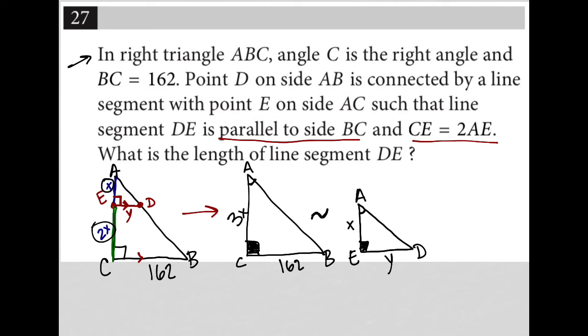And because they're similar, that means the corresponding sides are proportional. So that means the relationship between Y and 162 is the same as the relationship between X and 3X. And we already know that relationship, right? Like triangle ABC is three times larger than triangle ADE. We know that because of this X and 3X here. So I can make a proportion. I can say, well, X over 3X must be equal to Y over 162, right? Like that's what I can do when I know I have similar triangles.